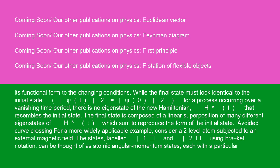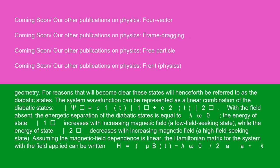Avoided curve crossing: for a more widely applicable example, consider a two-level atom subjected to an external magnetic field. The states, labeled |1⟩ and |2⟩ using bra-ket notation, can be thought of as atomic angular momentum states, each with a particular geometry. These states will henceforth be referred to as the diabatic states. The system wave function can be represented as a linear combination of the diabatic states: |psi⟩ = c1(t)|1⟩ + c2(t)|2⟩. With the field absent, the energetic separation of the diabatic states is equal to omega_0. The energy of state |1⟩ increases with increasing magnetic field (a low field-seeking state), while the energy of state |2⟩ decreases with increasing magnetic field (a high field-seeking state).